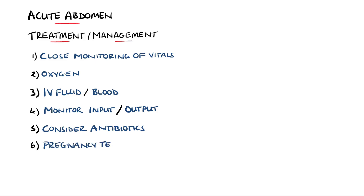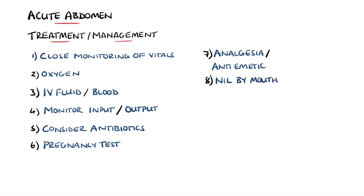A pregnancy test should also be done if the female is of childbearing age. Analgesia and antiemetic agents may also be prescribed, and patients with acute abdomens should generally be kept nil by mouth in case they require surgery. A surgical review should also be requested to determine the need for immediate operative management or exploratory surgery.